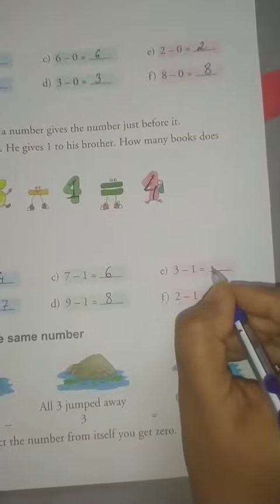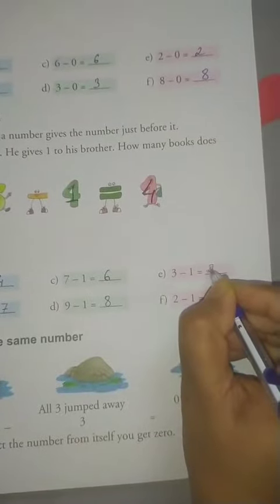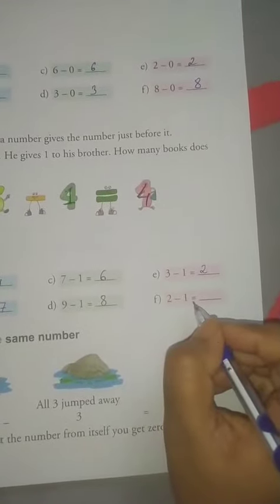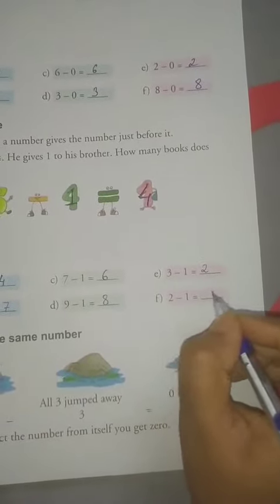3 minus 1. What comes before 3? 2. 3 minus 1 is equal to 2. 2 minus 1. What comes before 2? Yes, 1. So 2 minus 1 is equal to 1.